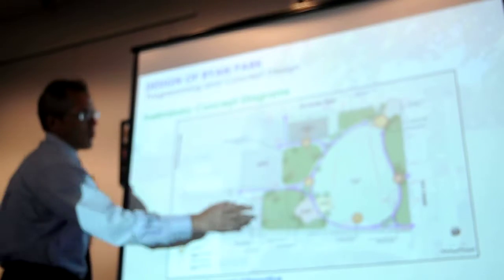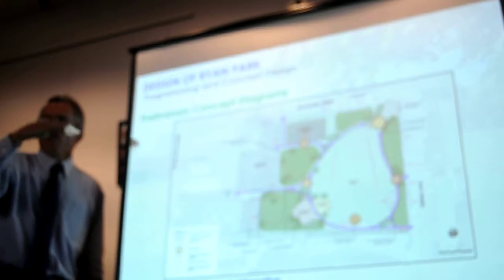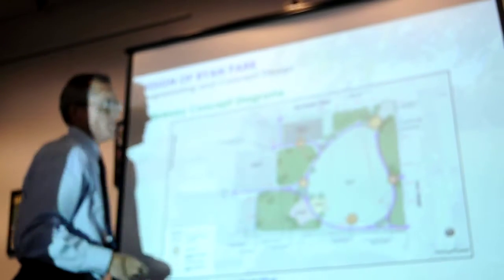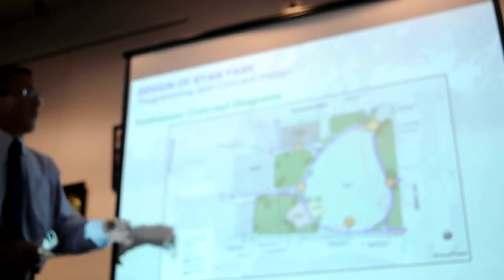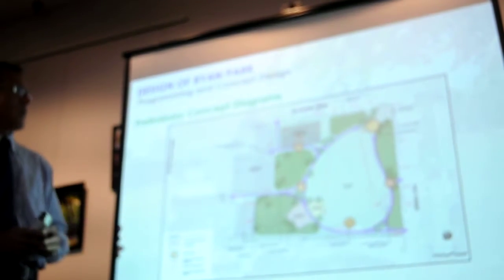We're creating more green space along the western portion of the park. Already some of the trees there have been removed to open up sight lines between the parking and the open spaces. The basketball court is maintained in its current location. The perimeter is improved, the surface is improved, the fencing and such will be improved.